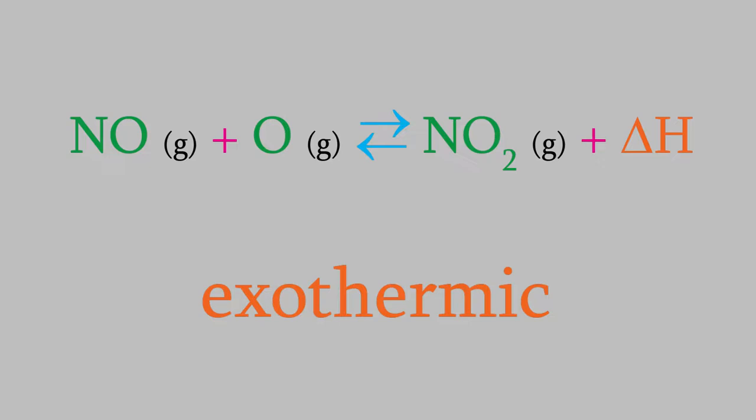But, think about what that means. Le Chatelier's Principle tells us that if we add one of the products, the reaction will shift to the left. That includes the heat. So, if we heat up the container in which this reaction happens, we'll shift the reaction to the left.